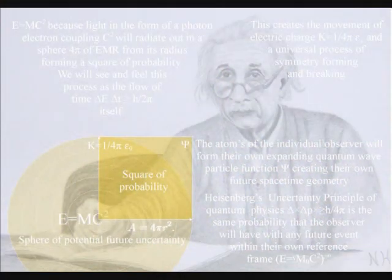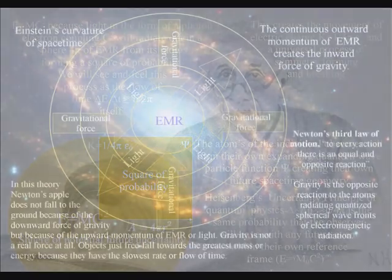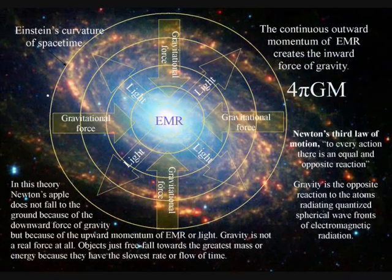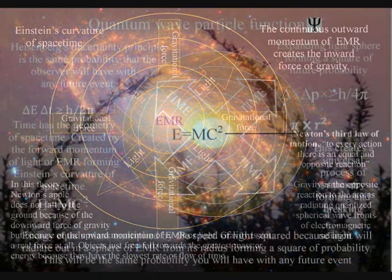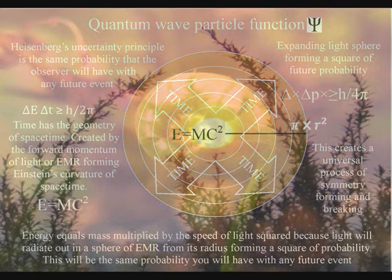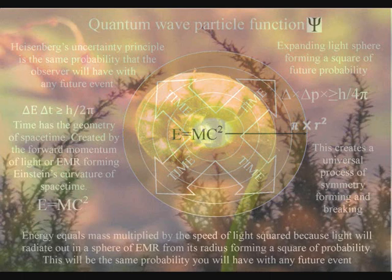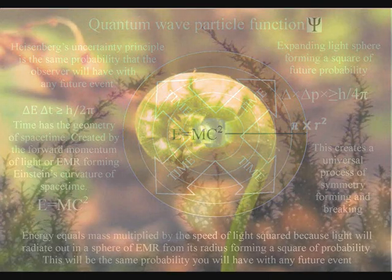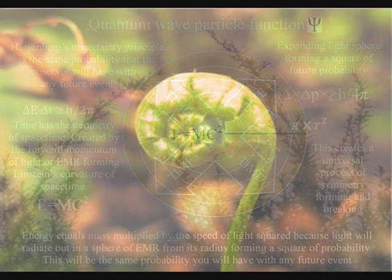The greater the energy, the slower time will run within an individual reference frame, and the greater the curvature of space-time within that frame of reference. The complexity and diversity of all life is based on the ratio of this dynamic geometry of this one universal process.